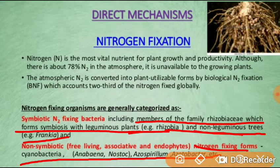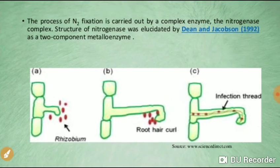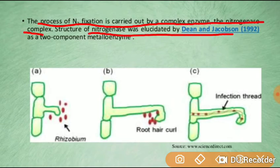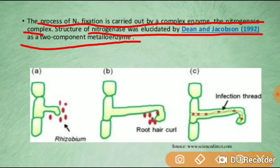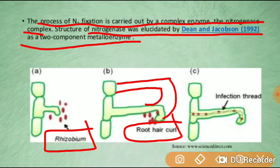Non-symbiotic free-living and associative endophyte nitrogen-fixing bacteria include Anabaena, Nostoc, Azospirillum, and Azotobacter. The process of nitrogen fixation is carried out via the complex enzyme nitrogenase. The structure of nitrogenase was elaborated by Dean and Jacobson (1992) as a two-component metalloenzyme. Rhizobium causes root hair curl and infection thread formation, leading to nitrogen fixation.